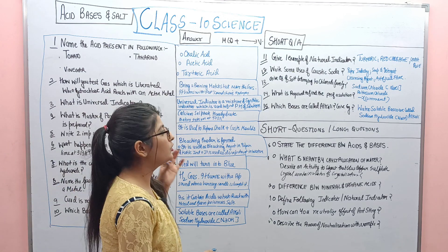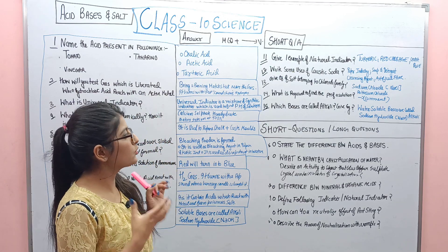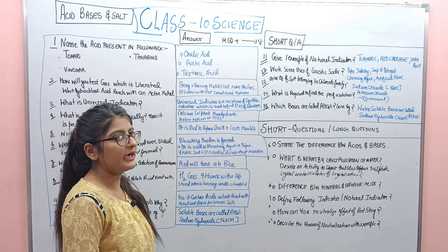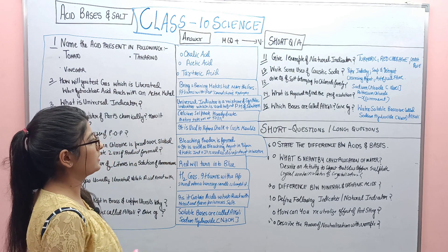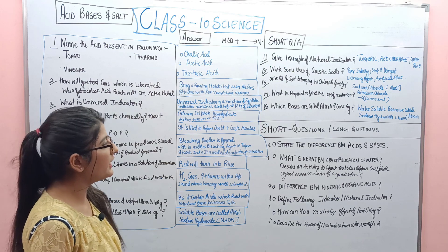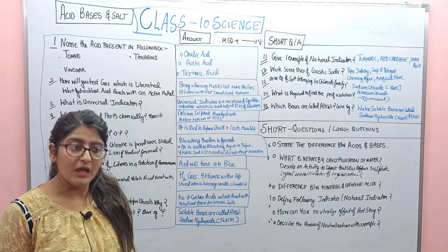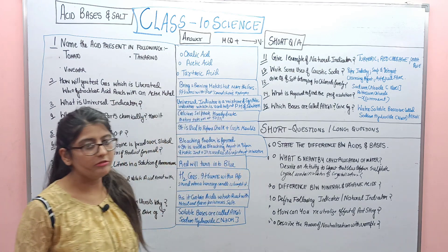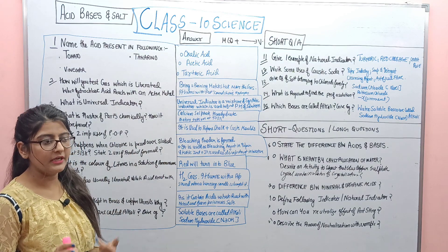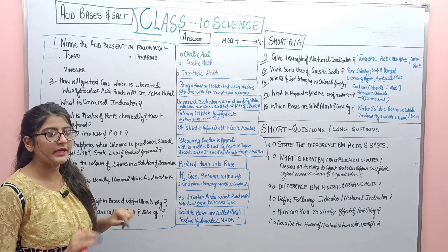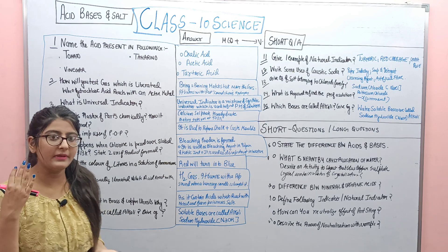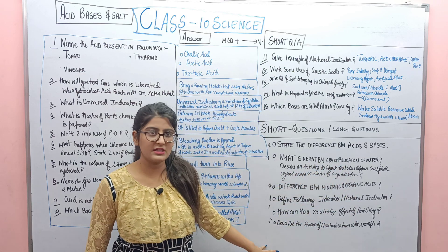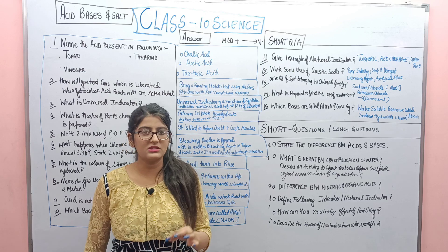Question 13: Give one example of a salt belonging to the chloride family. I have written two examples: sodium chloride and potassium chloride. Question 14: What is required to find the pH of a solution? Tell me in the comment section. Here I have also written some 3-mark questions which you need to learn from the description box — write your answers on paper, then check them in the description box to see if they are correct or wrong.